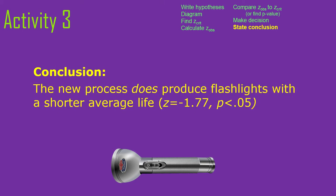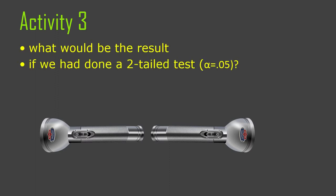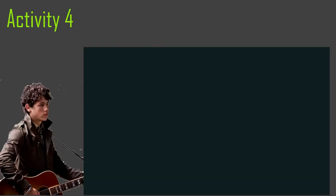In conclusion, the new process does produce flashlights with a shorter average life. In a research report you'd include the z-statistic of your sample estimate and state whether p is less than or greater than your alpha level. As an exercise, consider what the result would be if we had done a two-tailed test at alpha 0.05 instead. It's a good exercise to go back through your work and see where you have to start changing things and where those changes have implications.